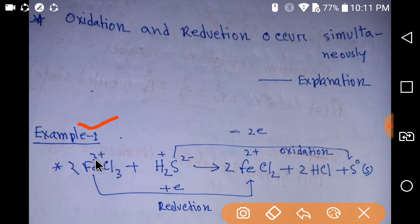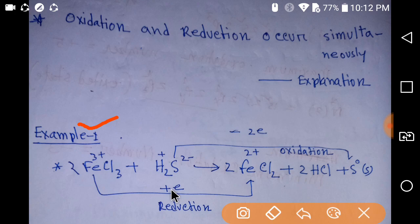the ferric ion is 3+, but here the oxidation state of iron is 2+. That is, iron Fe³⁺ is taking one electron, so this is a reduction process because in this process an electron is being gained. This ferric ion is an oxidizing agent as it is taking electrons.